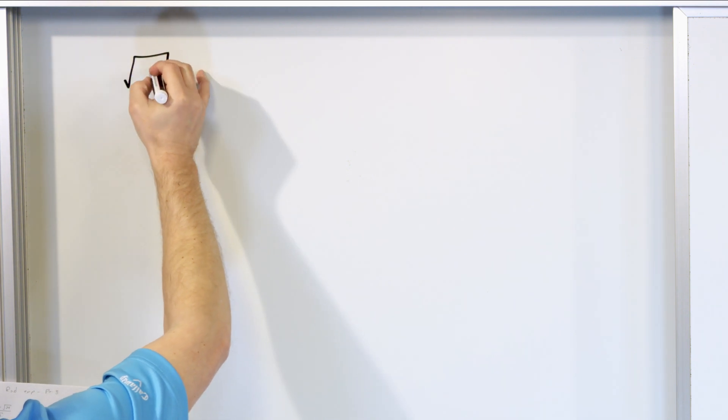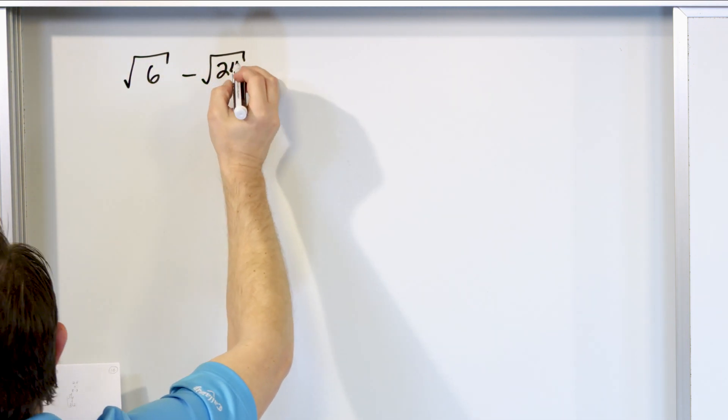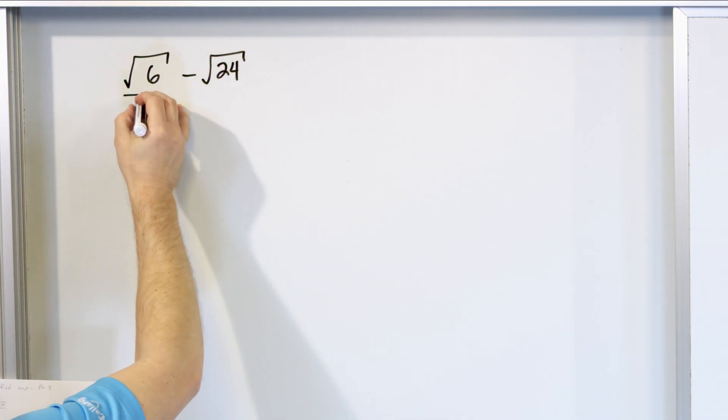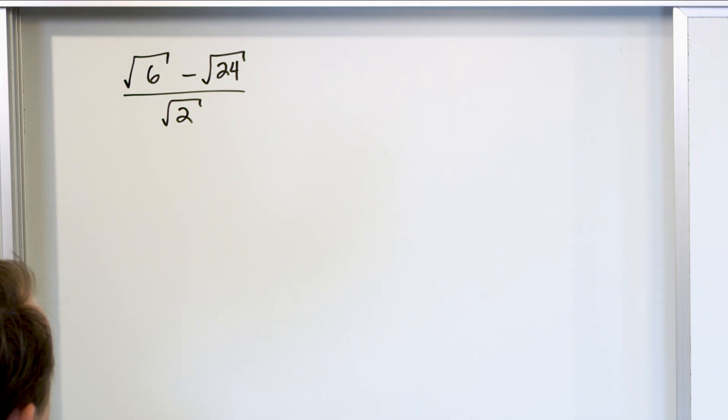So what if I have the square root of 6 minus the square root of 24, and then on the bottom it'll be square root of 2. Alright, so we want to do that. Now, we have a couple things we don't like.